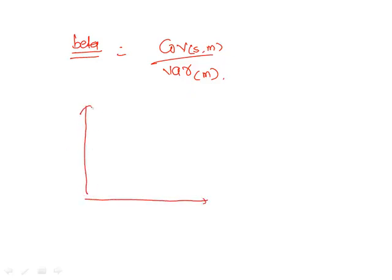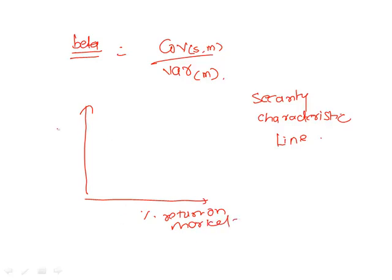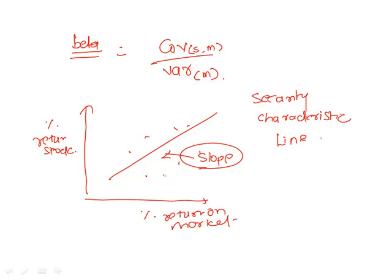This is what we learned at level 1, we drew a line which was called security characteristic line. What do we put on x axis? We put percentage of return on market. What we put on y axis is percentage of return on a particular stock of whom we want to calculate beta and then we draw a line. Maybe the values could be something like this. So we try to draw a line which we have also learned at level 2 we call this as regression. The slope of this line is the beta of that particular stock. And of course beta reflects what kind of risk? Market risk or systematic risk, the risk that cannot be diversified away.